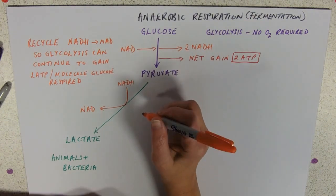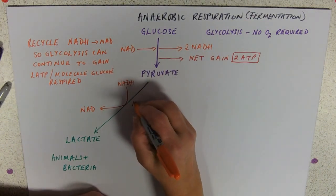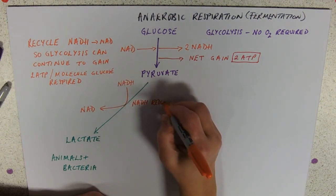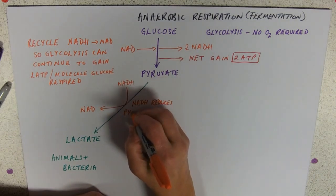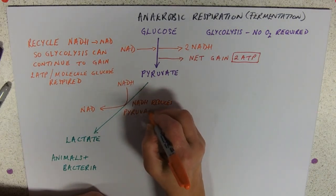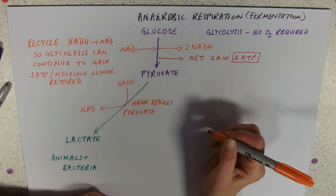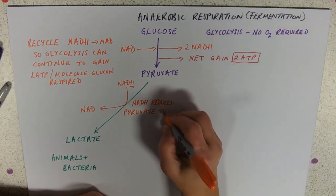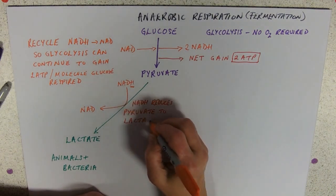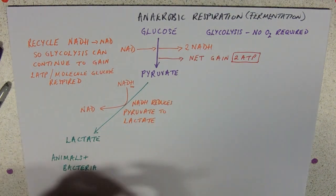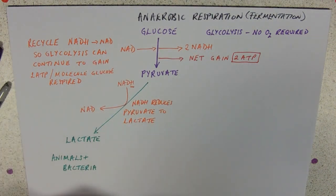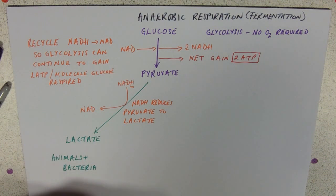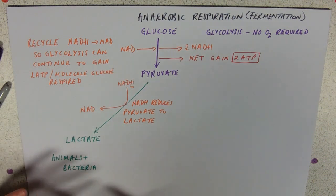How you would put this in an exam is to say that the NADH reduces pyruvate. Remember: oxidation is loss, reduction is gain — the pyruvate has gained that hydrogen to become lactate. In a longer answer, perhaps an essay or something for 4 or 5 marks, you would need to describe the reactions of glycolysis as well. That's what happens in animals and bacteria.